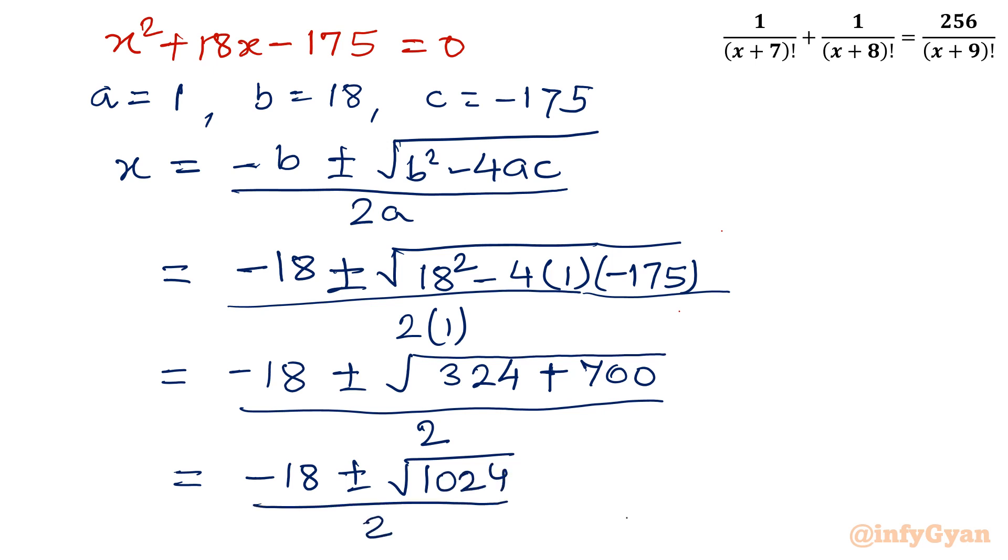So if you will check this is 32 square, so let me write in next step minus 18 plus minus 32 over 2. Now let us consider plus and minus both signs. If I will consider plus sign, then it will become minus 18 plus 32 over 2.